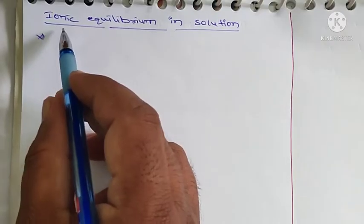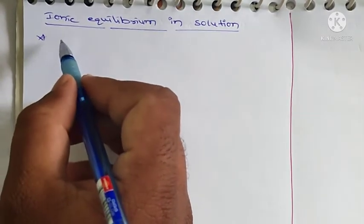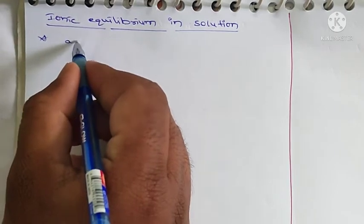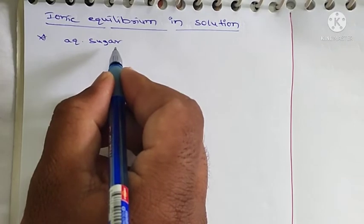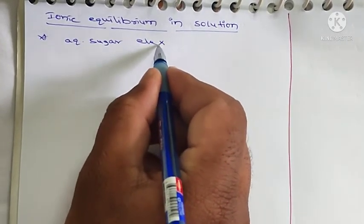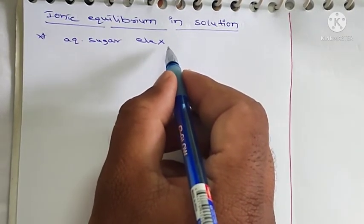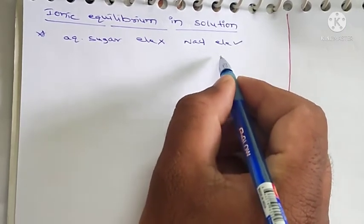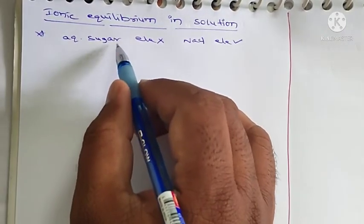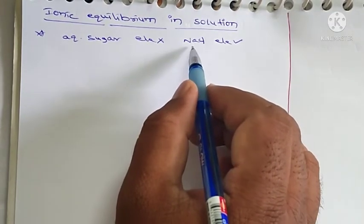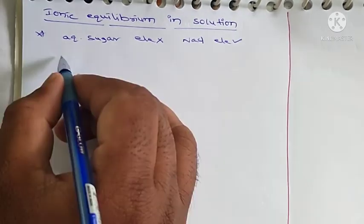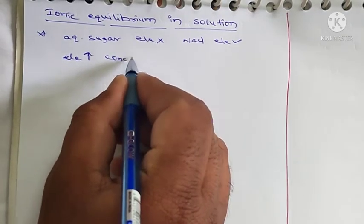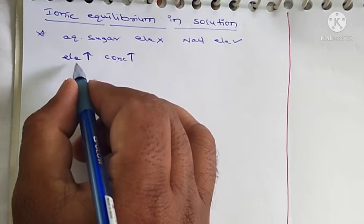Next, ionic equilibrium in solution. We will study the equilibria involving ions. The aqueous solution of sugar does not conduct electricity, but common salt NaCl added to water conducts electricity. The conductance of electricity increases with increasing concentration of salt — if the concentration of salt increases, the conductance increases.